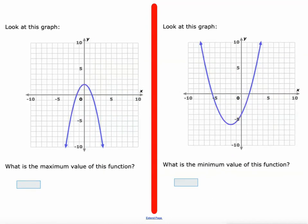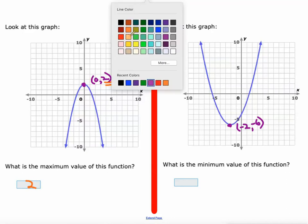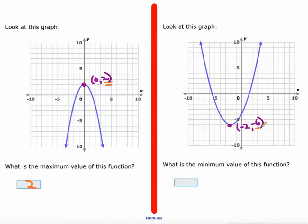What about the maximum and minimum values? I think it's important to identify the vertex. Here, the vertex is at 0, 2, so the maximum value is 2. And the one on the left, our vertex is at negative 2, negative 6, and they're asking the minimum value — the minimum value is negative 6.